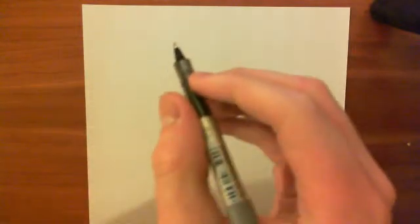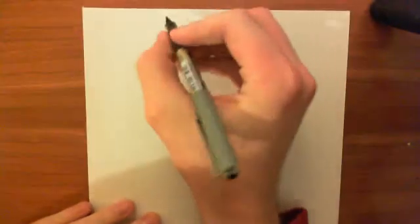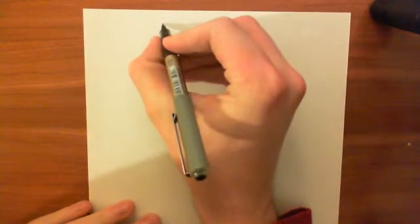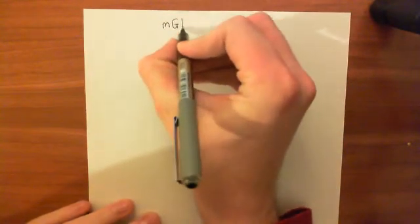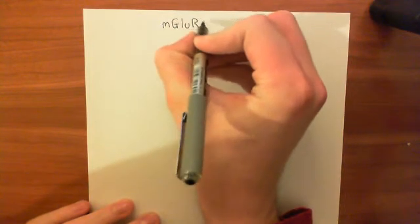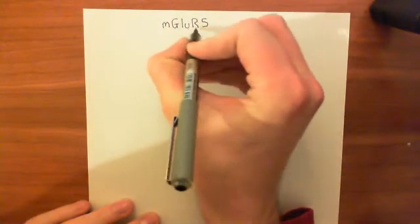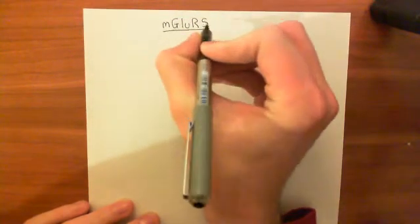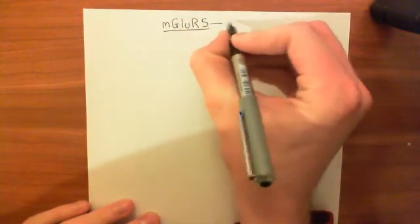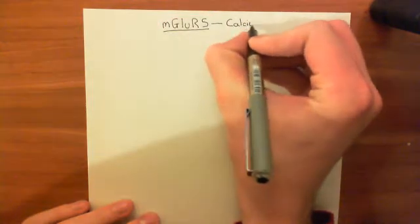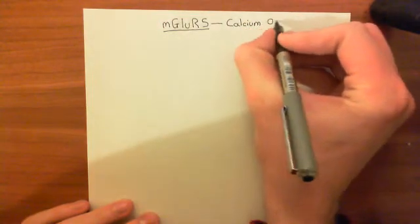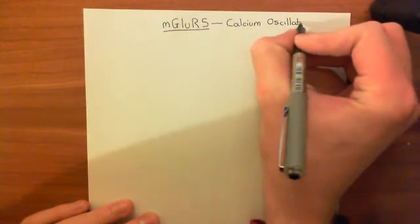Welcome to this next video in the playlist on calcium signalling. In this video, we're going to look at how the metabotropic glutamate receptor — specifically the metabotropic glutamate receptor 5, mGluR5 — can build up calcium oscillations, meaning oscillations in the level of calcium in the cytoplasm of cells with this receptor on.